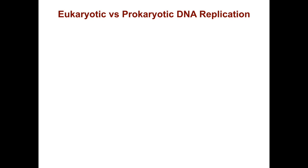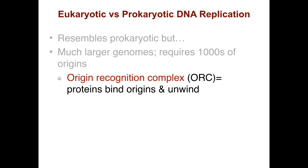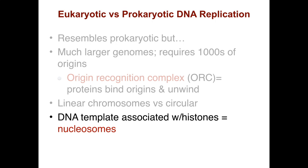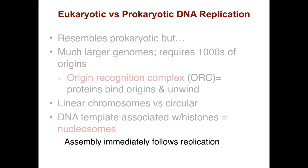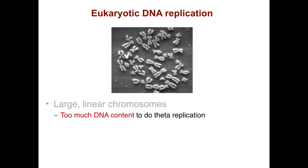Eukaryotic DNA replication is similar to prokaryotic but there are some differences. Eukaryotes have much larger genomes, which requires thousands of origins. There are origin recognition complexes — these proteins bind to origins and unwind. There are multiple linear chromosomes versus usually one circular chromosome in prokaryotes. The DNA template is also associated with histones that form nucleosomes, which is not the case in prokaryotes. Nucleosomes assemble immediately following replication in eukaryotes.